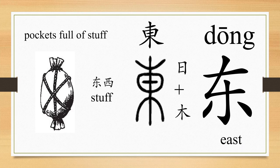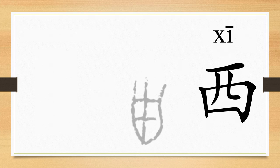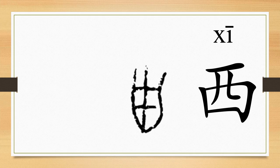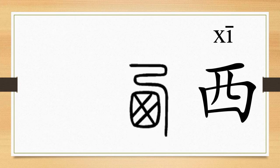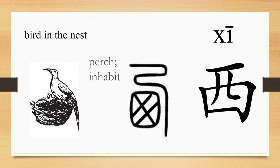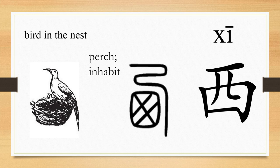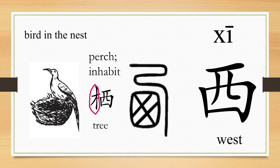The ancient Chinese character for xi comes from the image of the bird's nest. And then the writing adds the image of the bird. So xi, the original meaning, is perch, inhabit. And since the bird goes back to the nest when the sun is setting in the west, so xi extends to the meaning of west. And then people created another character, xi, with the radical mu, which originally means tree, to replace xi as the meaning of perch, inhabit. So xi nowadays mainly means west.